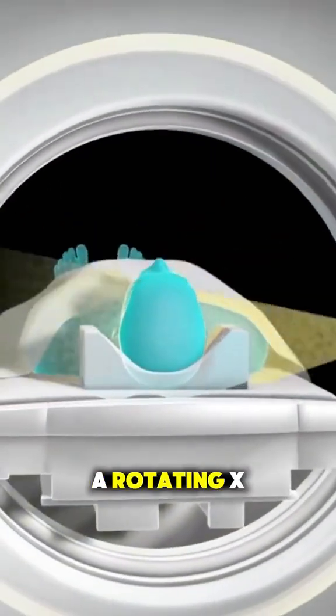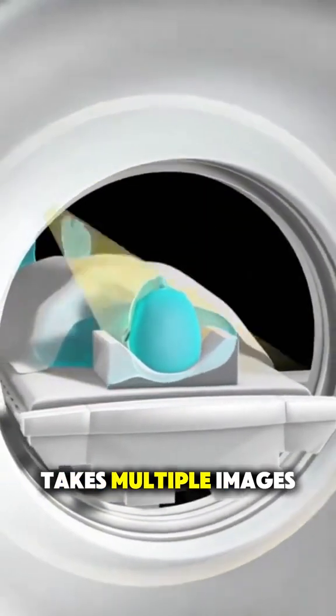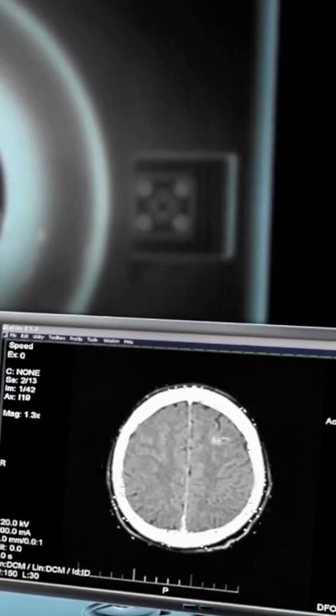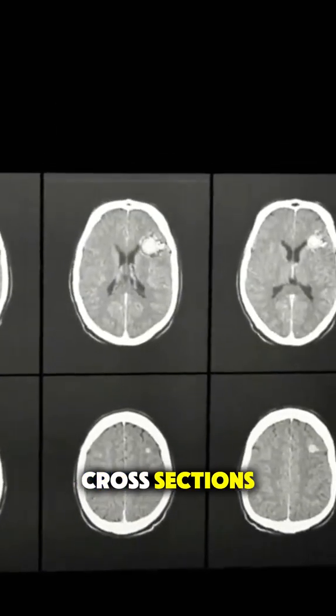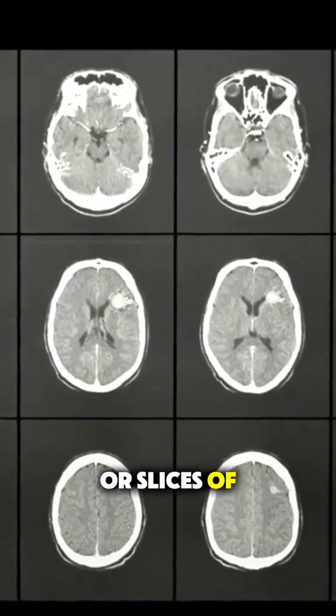Inside the machine, a rotating X-ray beam takes multiple images from different angles. These images are then combined by a computer to create detailed cross-sections, or slices, of your body.